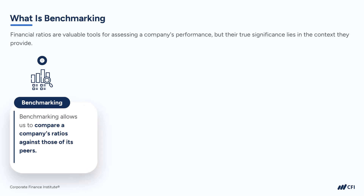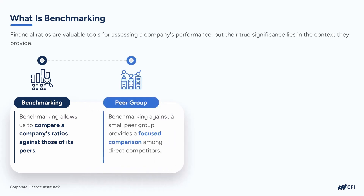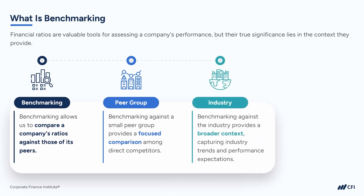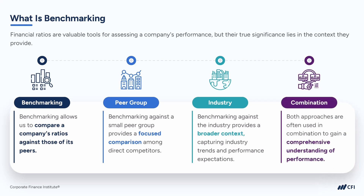Benchmarking is typically done against a small peer group and/or an industry benchmark. Benchmarking against a small peer group provides a very focused comparison among direct competitors, and so offers specific and actionable insights. On the other hand, benchmarking against the industry at large provides a broader context, capturing overall industry trends and performance expectations. Both approaches have their merits and are often used in combination to gain a comprehensive understanding of a company's performance and competitiveness.